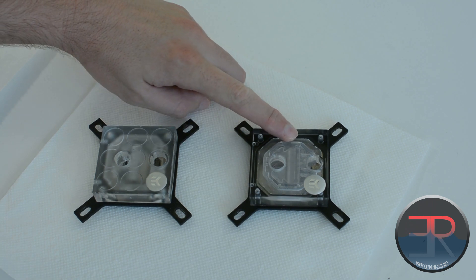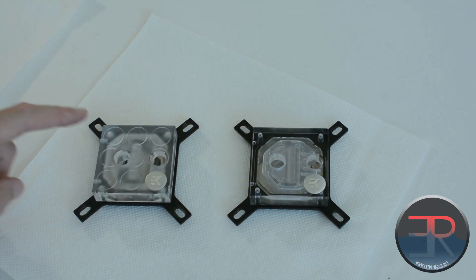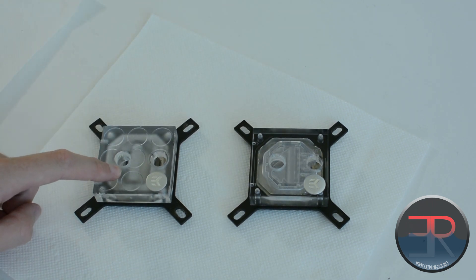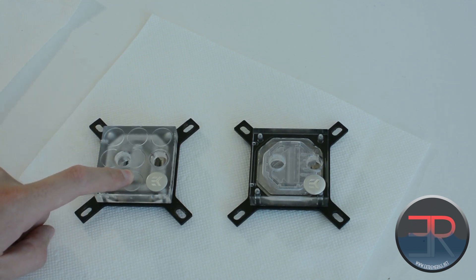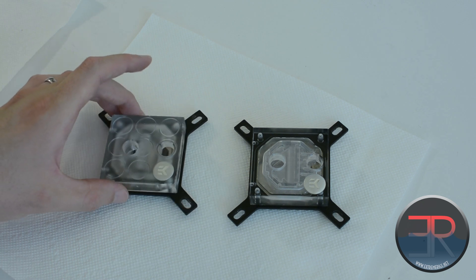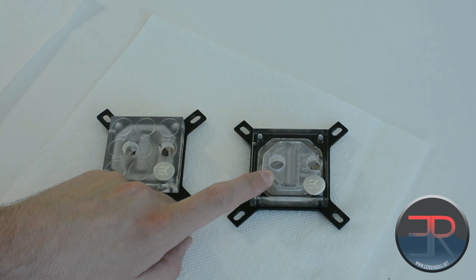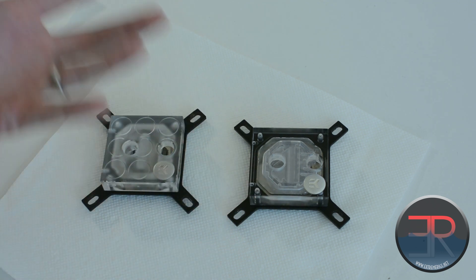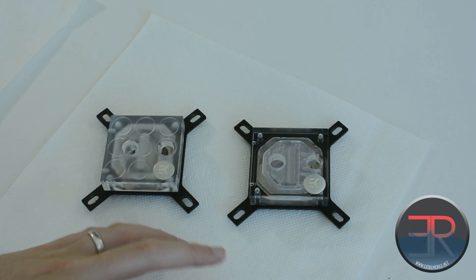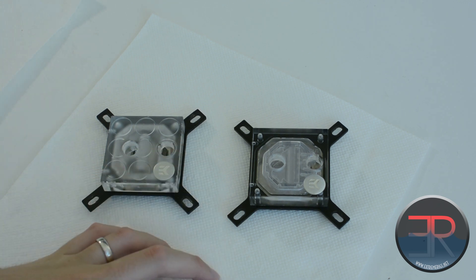On the right here, this is the new guy. It looks very similar to the guy on the left. This is the original EK Supremacy block. And the new one is called the EK Supremacy EVO, as in it's an evolution of the design. The design is very similar. You can see where the name came from.